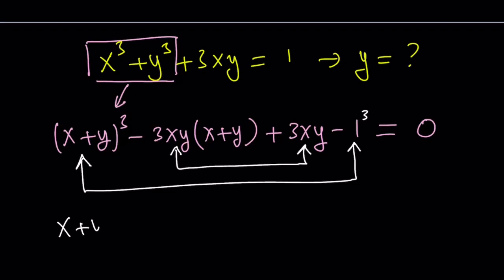But let's go ahead and write it this way first. x plus y cubed minus 1 cubed. This is a piece of it. And then minus 3xy, we take negative 3xy out. So, it's going to be x plus y minus 1. We need the negative 1 here because this is positive and we took out a negative. So, we have to negate it.